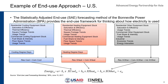The fourth example is the end-use approach applied in the US, called the Statistically Adjusted End-Use or SAE, as the methodology incorporates statistical adjustments to improve load forecasting. The end-use framework consists of loads from cooling, heating, and other equipment, both at residential and commercial levels.